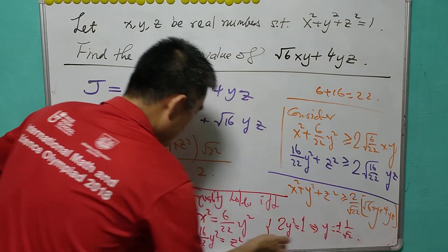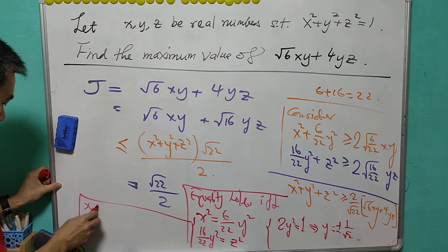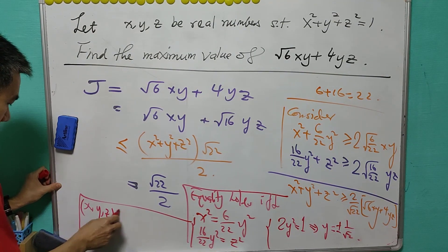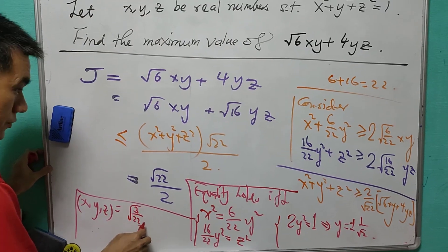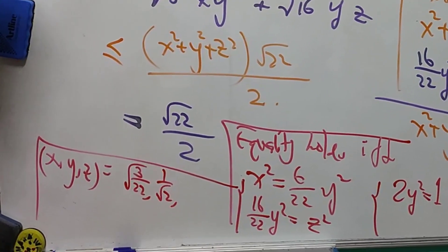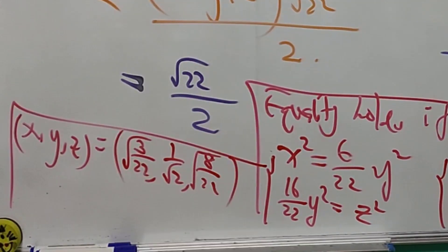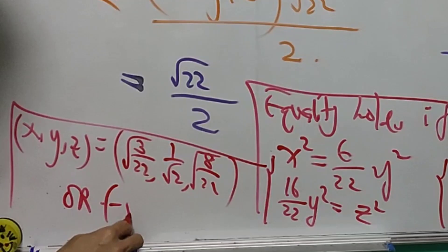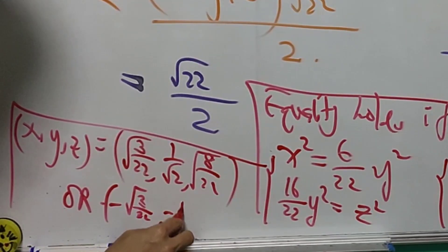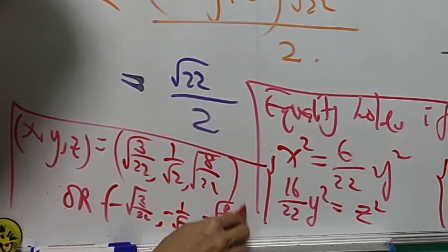And by some calculation, then we see that the equality holds. We have x = √(3/11), y = 1/√2, z = √(8/11), or it can be negative √(3/11), negative 1/√2, and negative √(8/11).